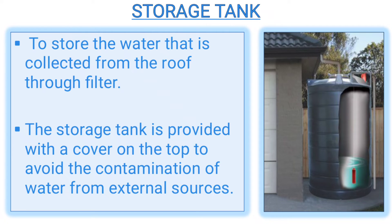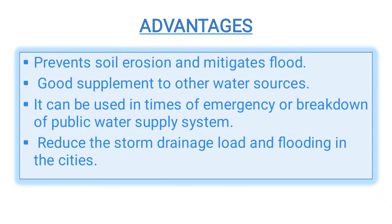Next, what are the advantages of installing a rainwater harvesting system in buildings or other locations? First, it prevents water wastage by arresting runoff, as well as prevents soil erosion and mitigates flooding in urban areas. It can be used in times of emergency and breakdown of the public water supply system. It also helps to reduce the storm drainage load and flooding in cities, among many more advantages.